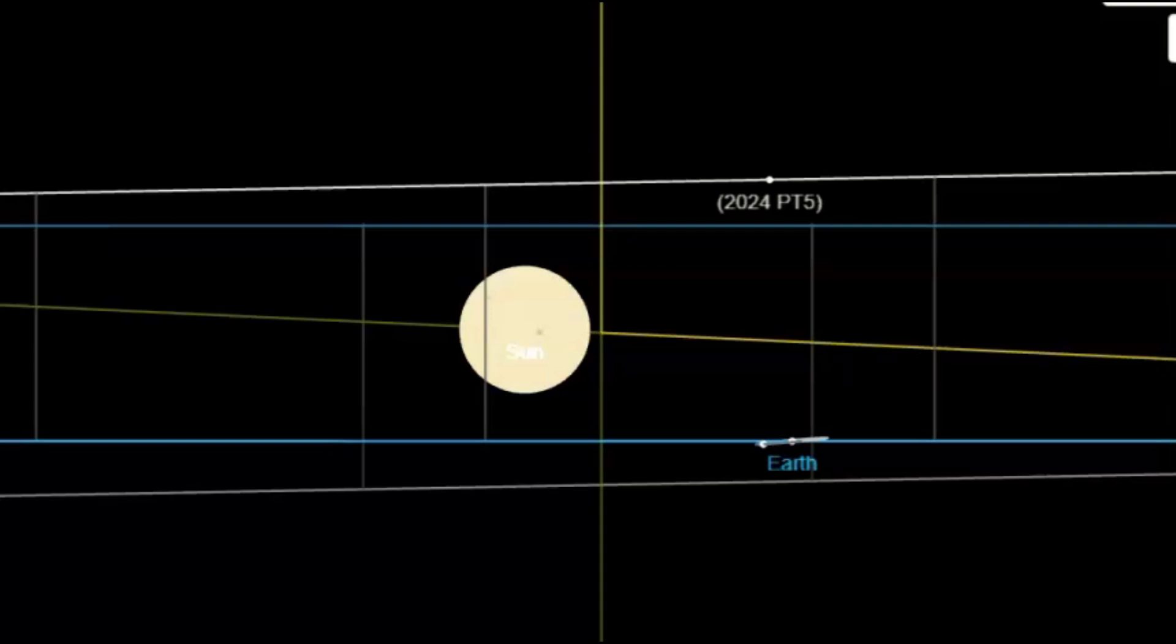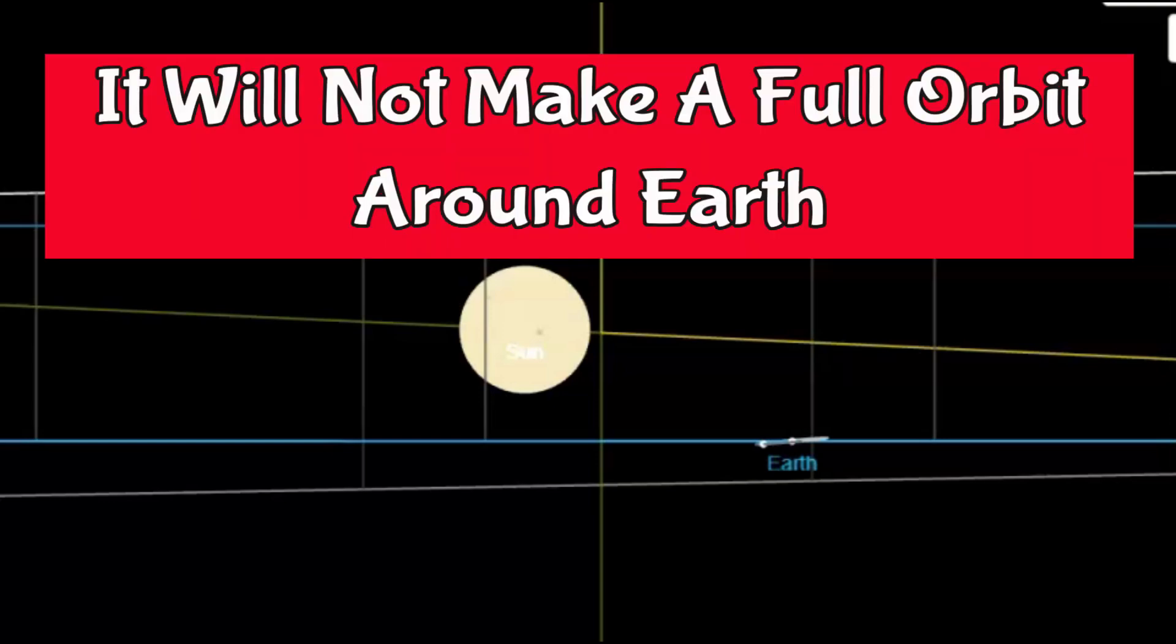Even though a lot of mainstream media is calling it a mini moon, normally to qualify as a mini moon, the asteroid must orbit Earth fully at least once. And it's not going to do that.